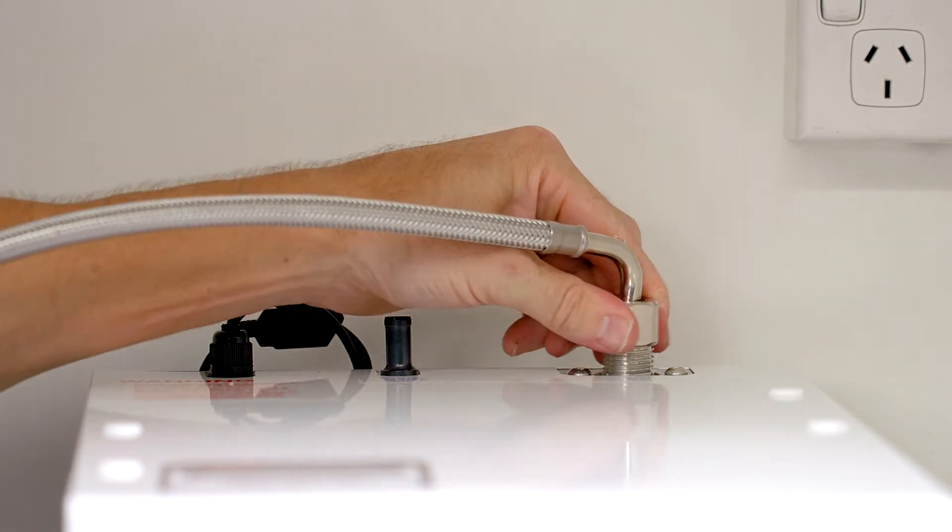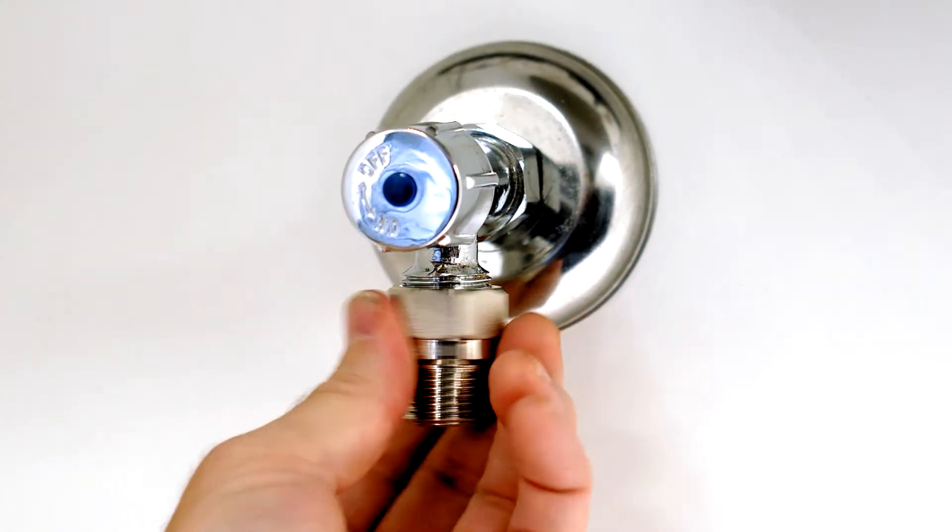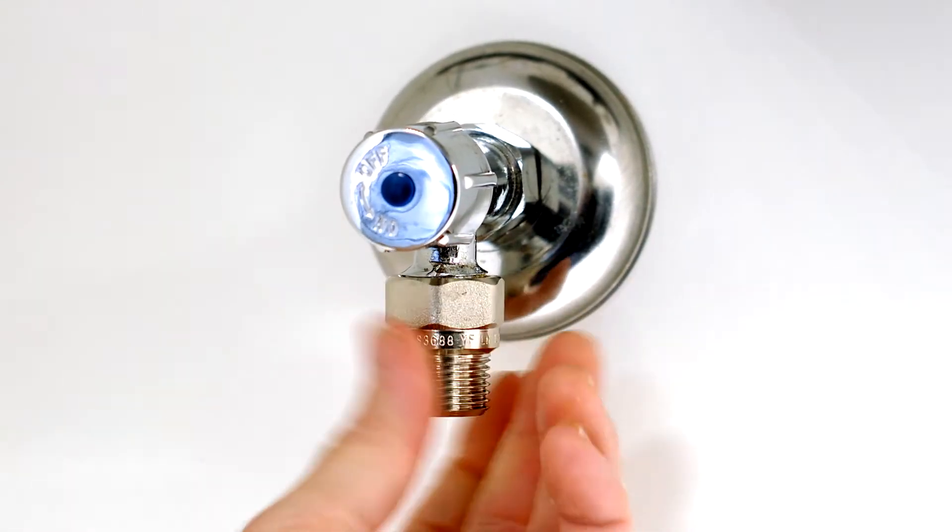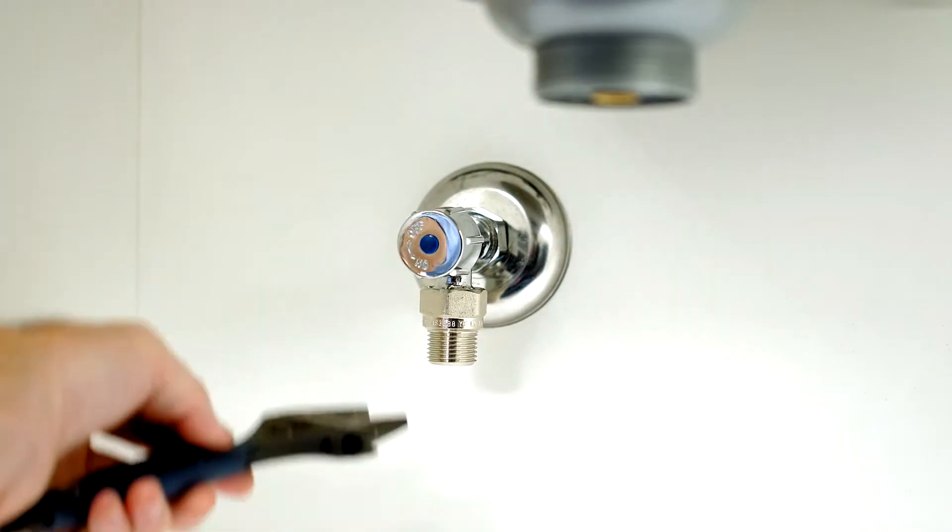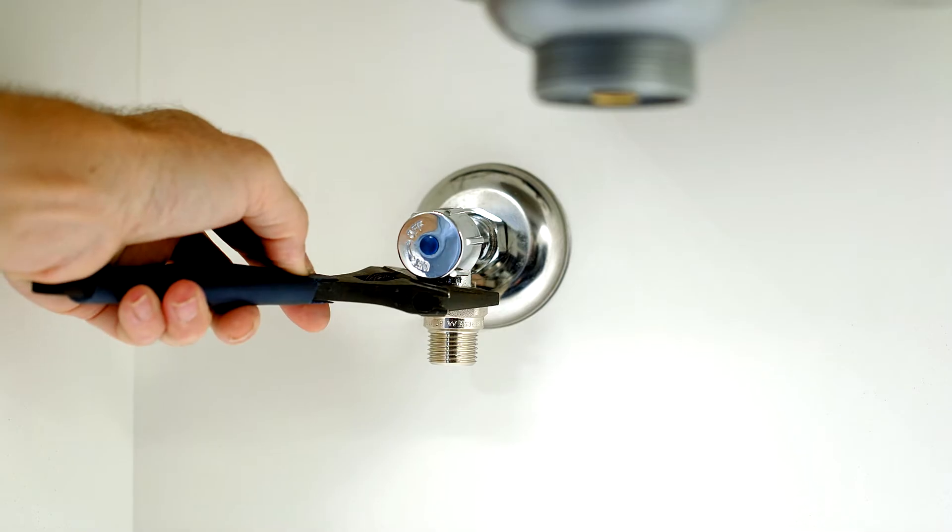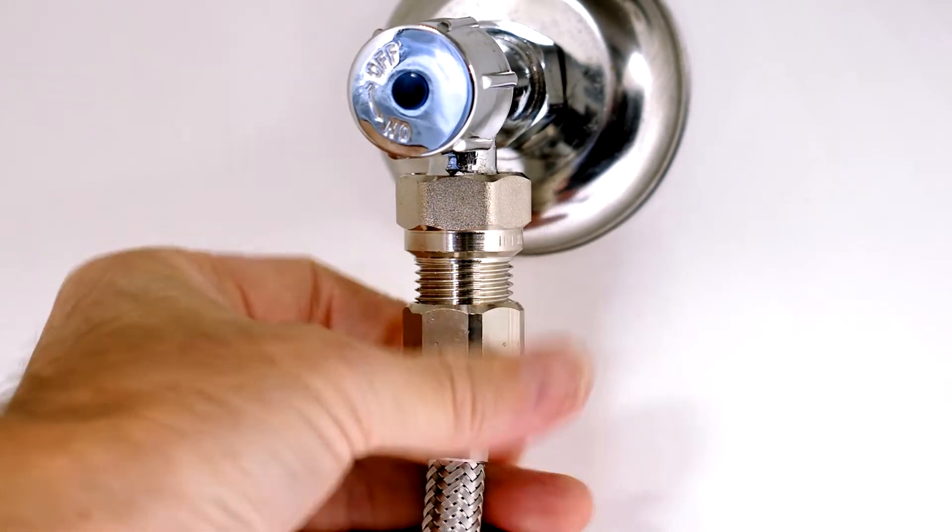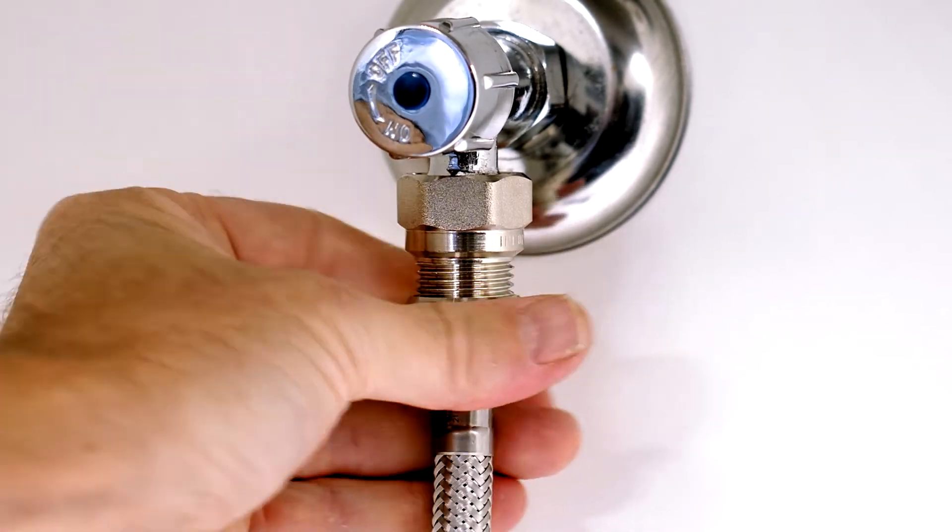Your Zip HydraTap also comes with an inline filter. Connect this to your mains water supply. Do these connections up finger tight and then tighten the last quarter to half a turn with a shifting spanner. Next, connect the other end of the braided hose to the inline filter and tighten this the same way.